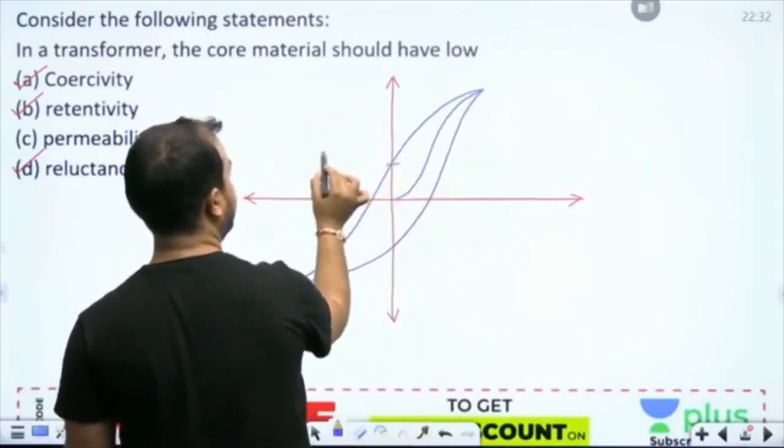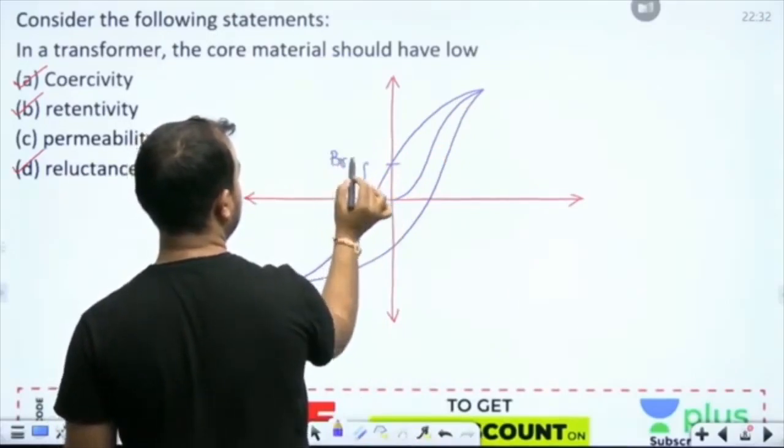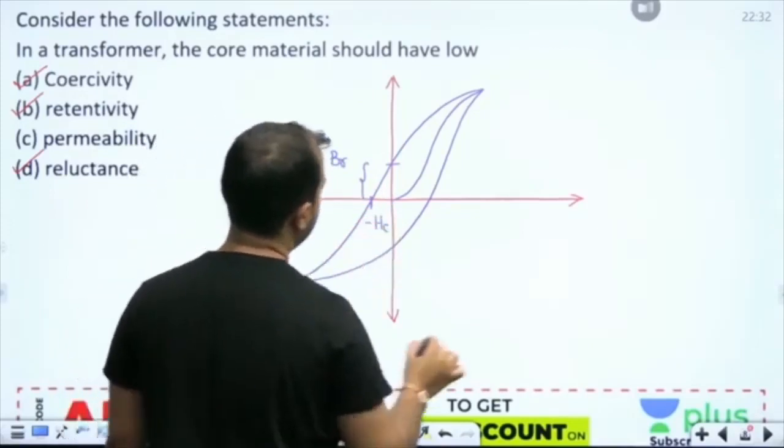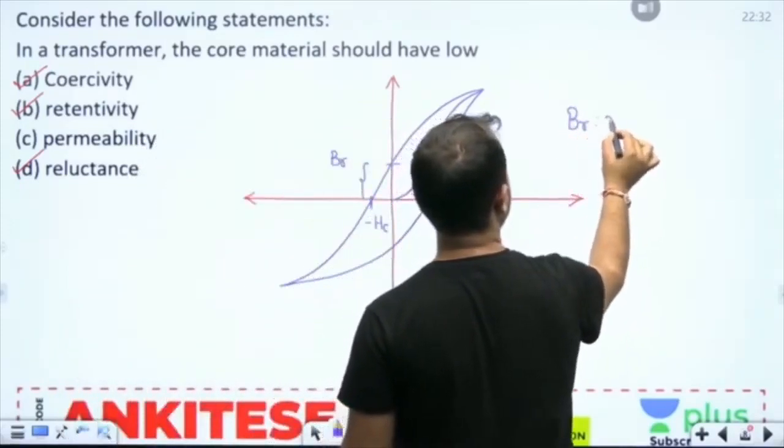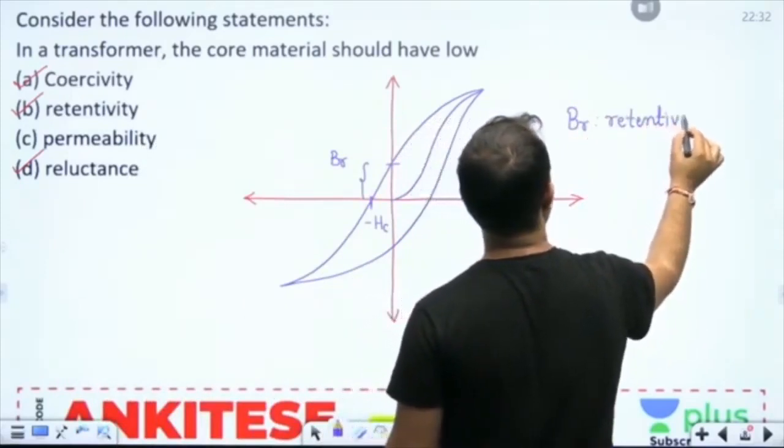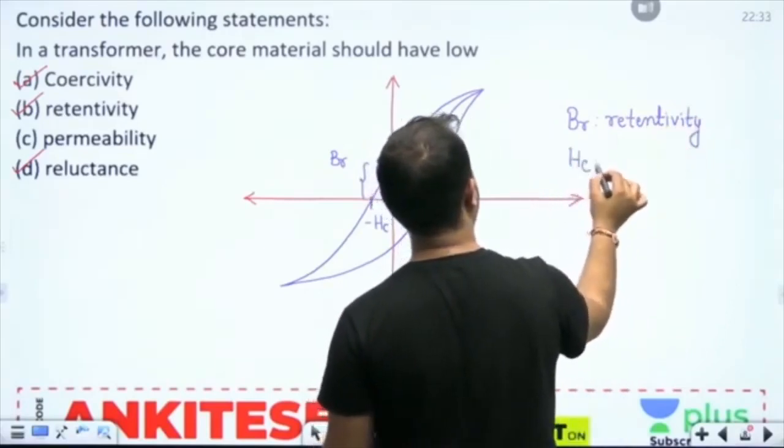That is, this is the retentivity. And this, my friend, is coercivity. Br is the retentivity, and Hc is coercivity.